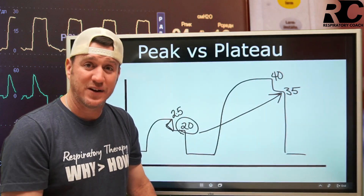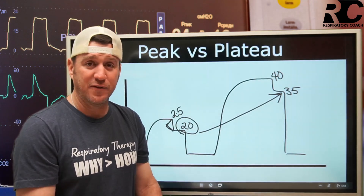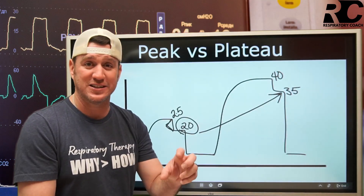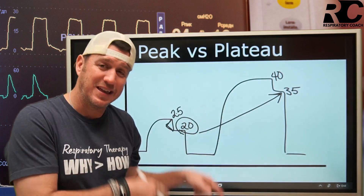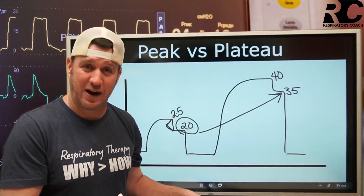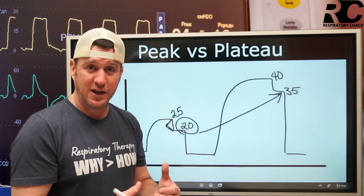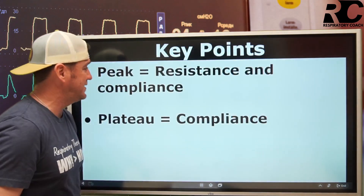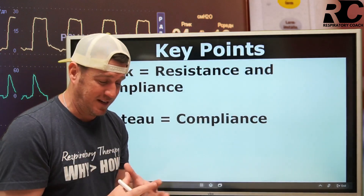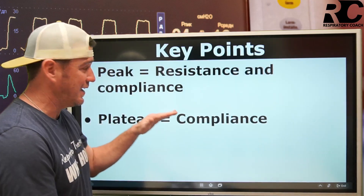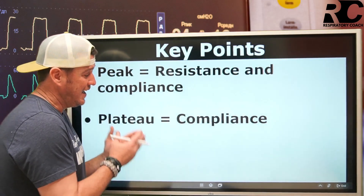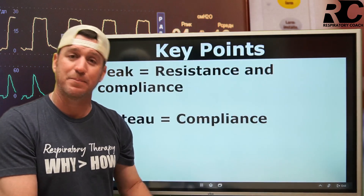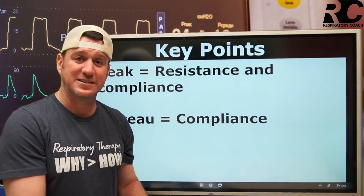We understand that trending peak and plateau pressures over time is very important — to watch for and get ahead of the curve when we are seeing trends of decreasing compliance or signs of increasing resistance. It's not ever just a snapshot. What are my pressures now? What were they yesterday, six hours ago, twelve hours ago? That helps us put a pattern to the direction of our patients. Remember: peak inspiratory pressure is the sum total of resistance and compliance. Plateau pressure removes resistance — it is just compliance. That's the biggest takeaway from understanding the difference between the two.